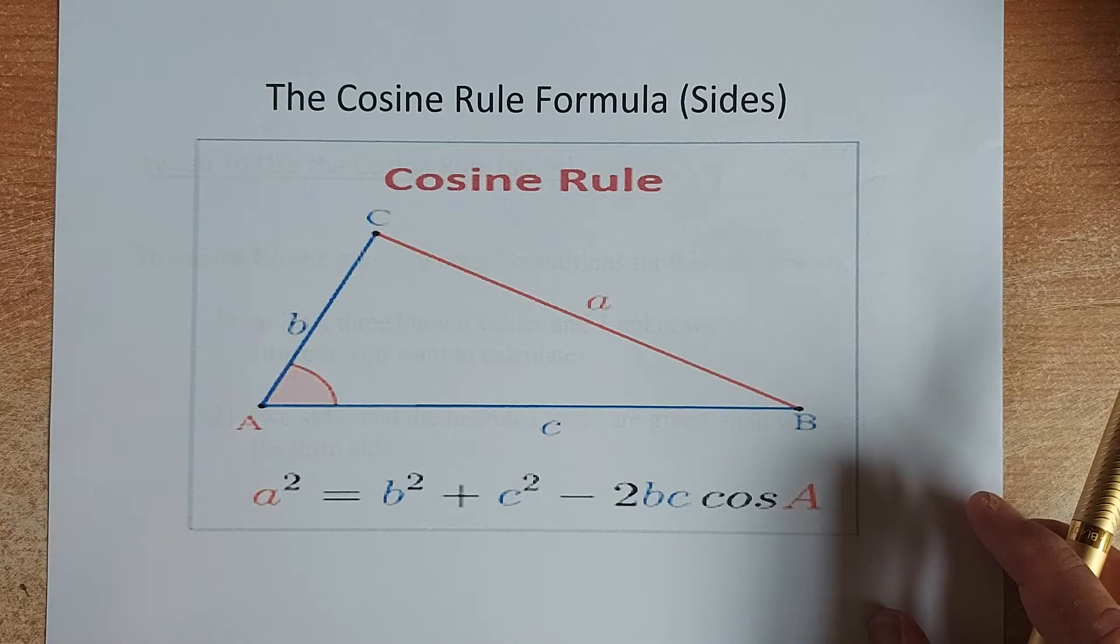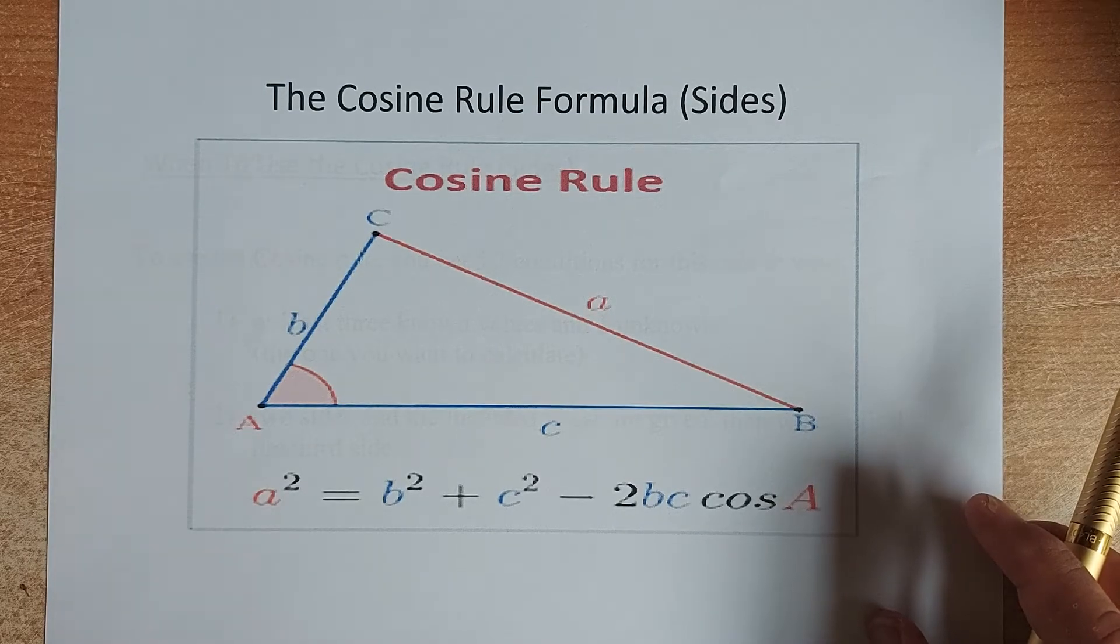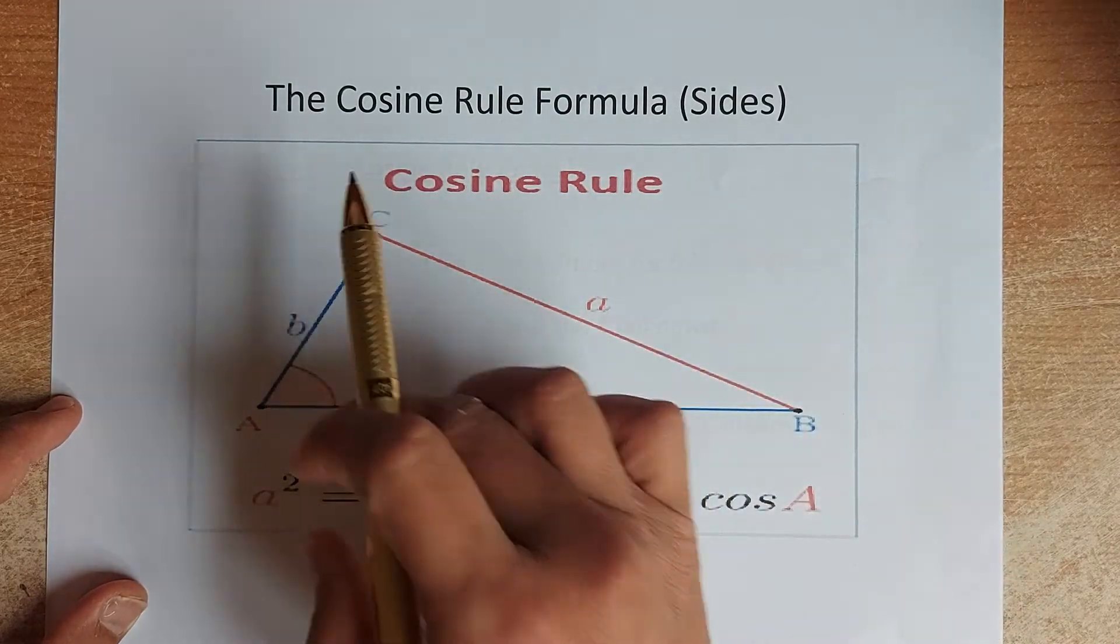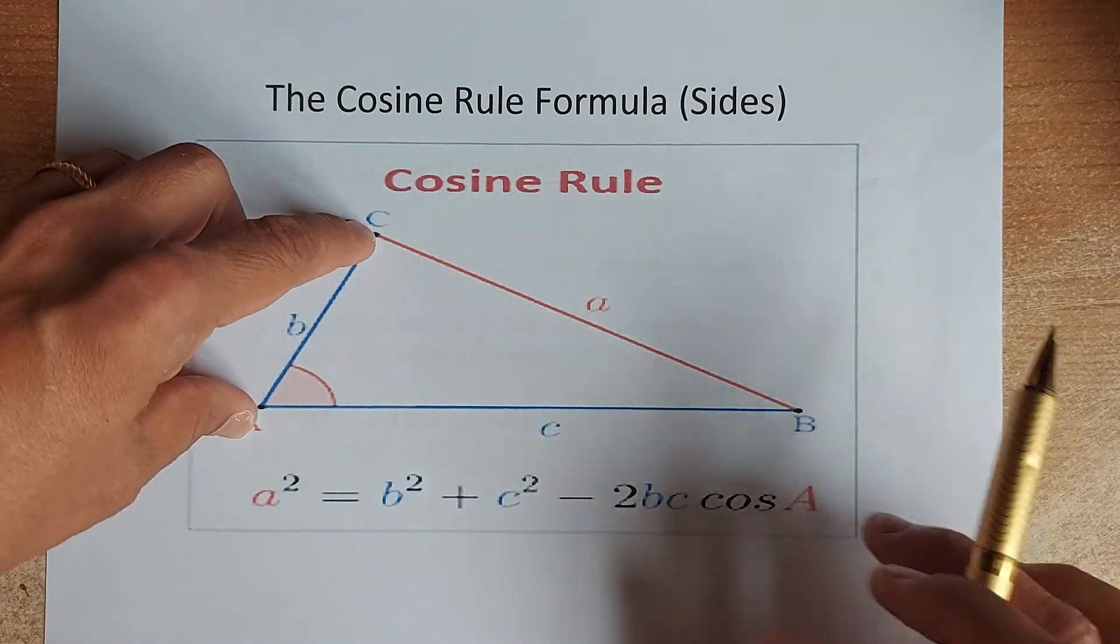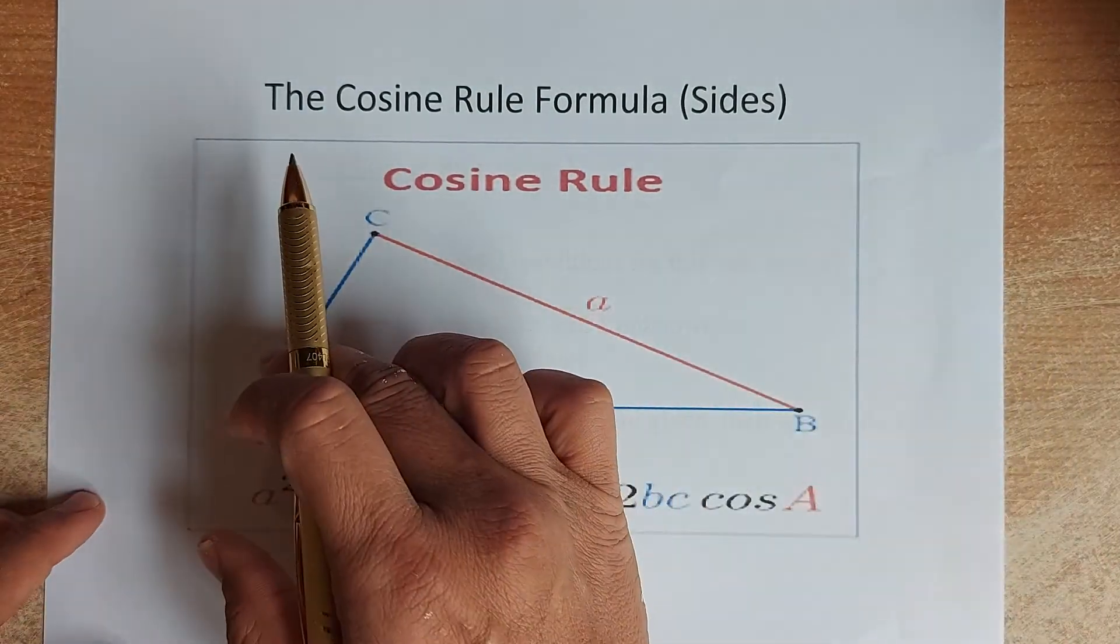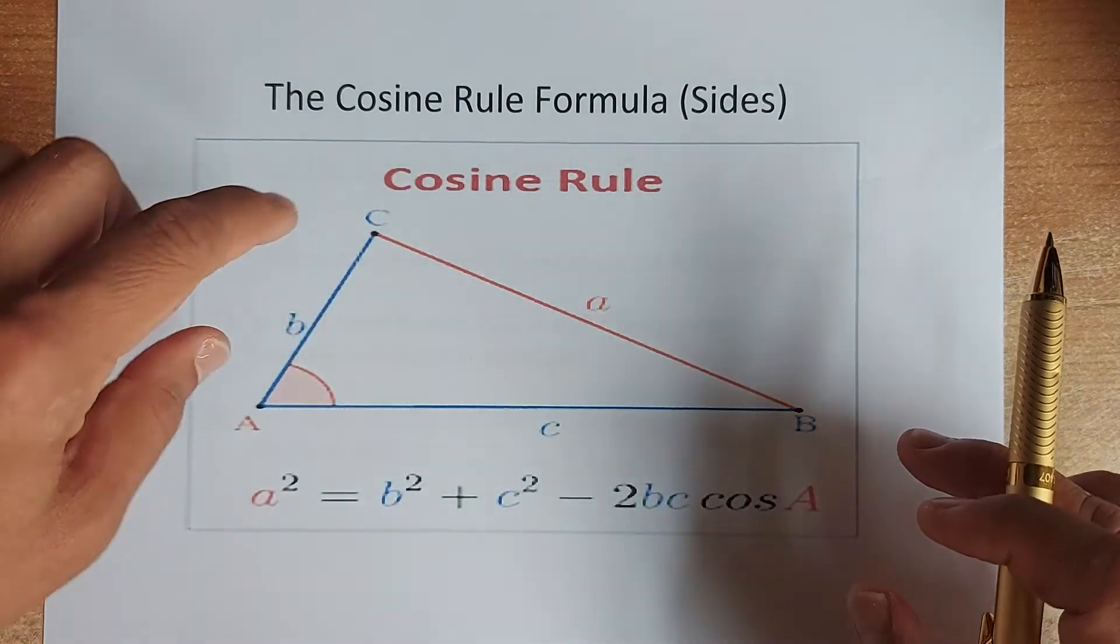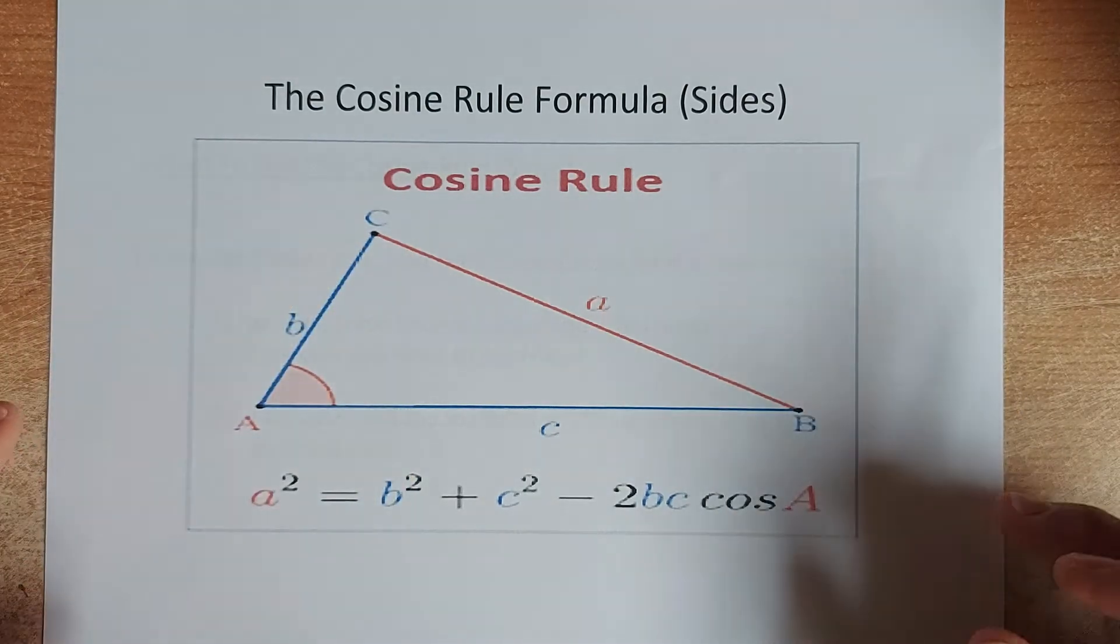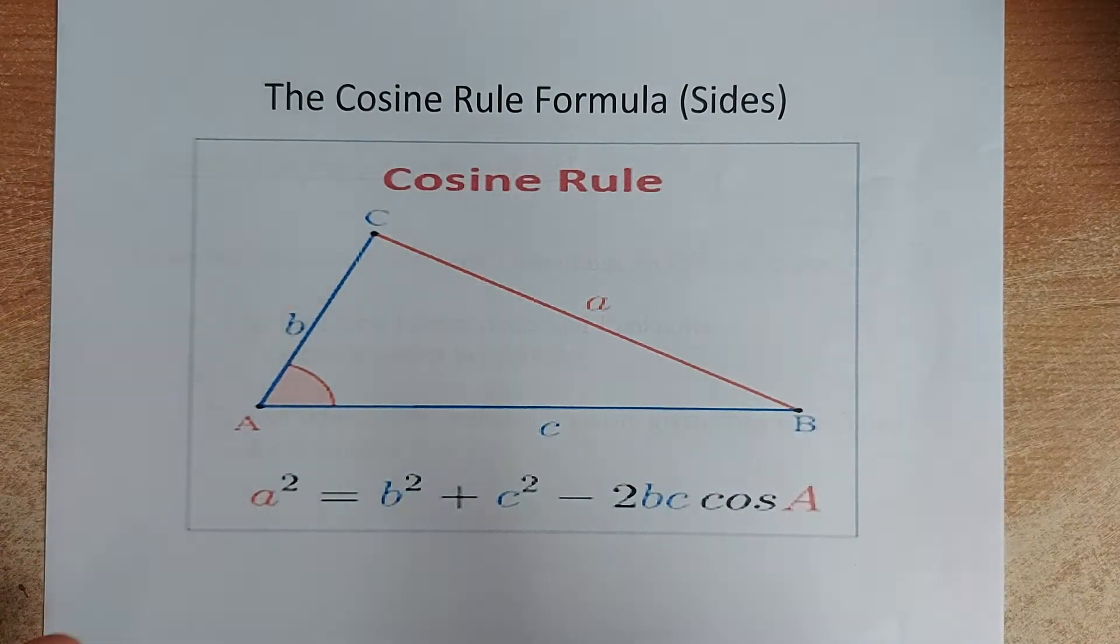The unknown value is the one you're going to find. And the second rule is that you must have two sides and the included angle. It means that if I have b and c, I must have angle A. If I have length b and a, then I must have angle C.